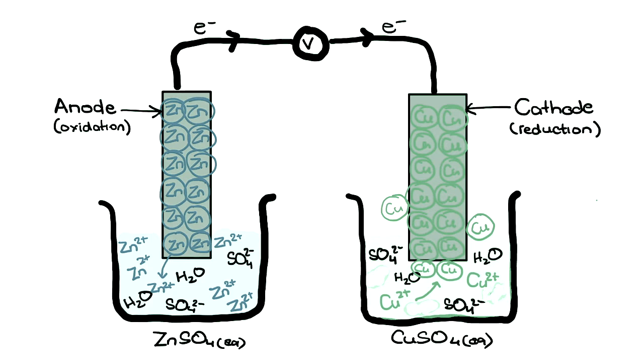Now to overcome this conundrum, a salt bridge is used to complete the circuit, which is generally filtered paper soaked in say potassium nitrate.